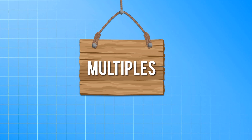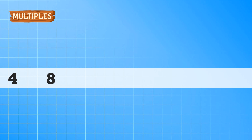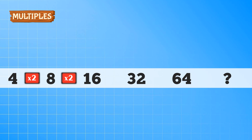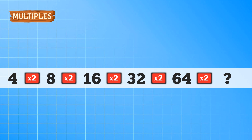Let's go to concept number 2: questions based on multiples. If you look at the series closely, you need not find the difference between consecutive numbers. Rather, every next term is 2 times the previous term — like 8 is 2 times 4, 16 is 2 times 8, 32 is 2 times 16, and so on. So your answer would be 2 times 64, that is 128.